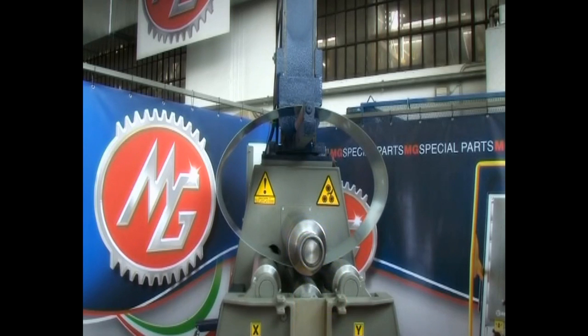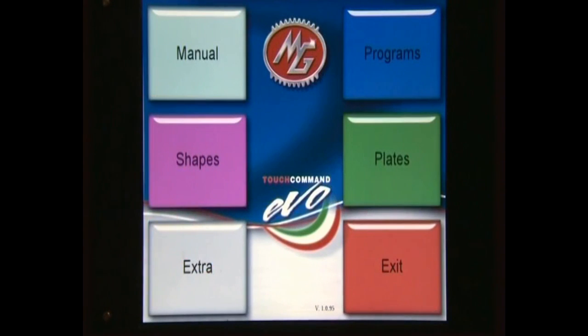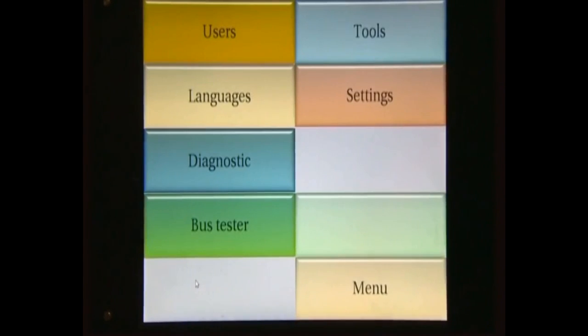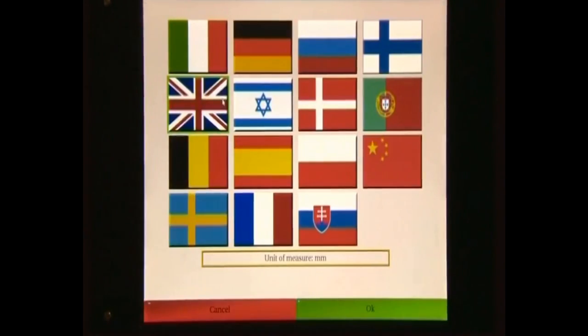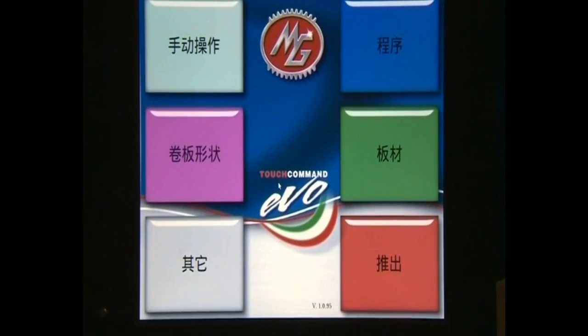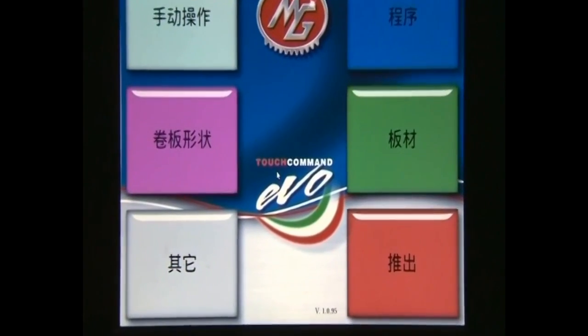Our software is available in all the main languages. To select a language from the main menu let's open the secondary one and then press the languages button. Let's choose the language of our interest. On request other translations can be added.